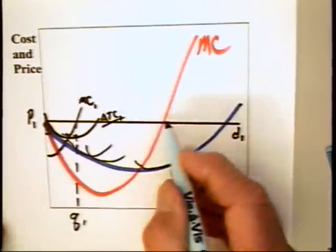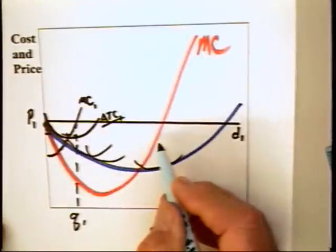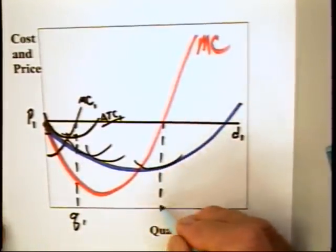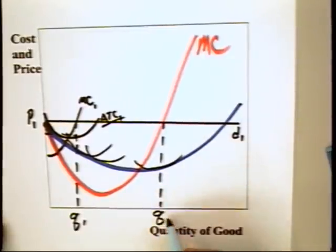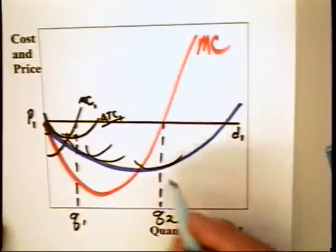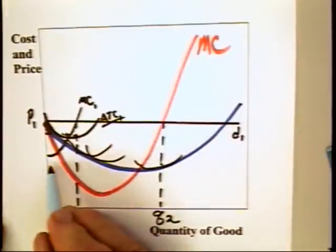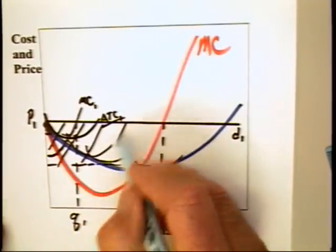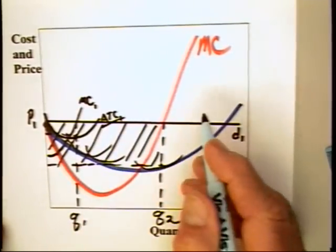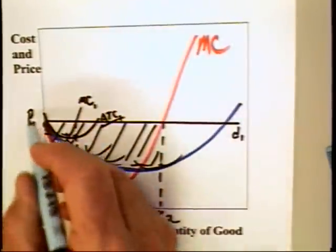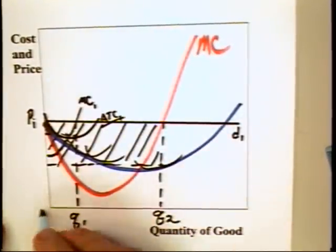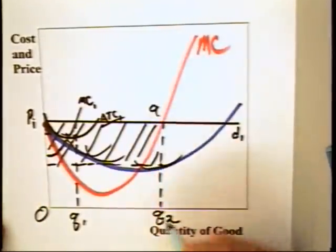The individual firm might then think, well, if I expand my scale of operation, my profit maximizing position for the long run will be Q2. If I do indeed achieve a much larger scale of operation, my profits can then go up. They can go up to a box that looks like this. Why? Because the firm can multiply price times Q2 and get revenues, which means the total revenues will be 0, P1, A, Q2.